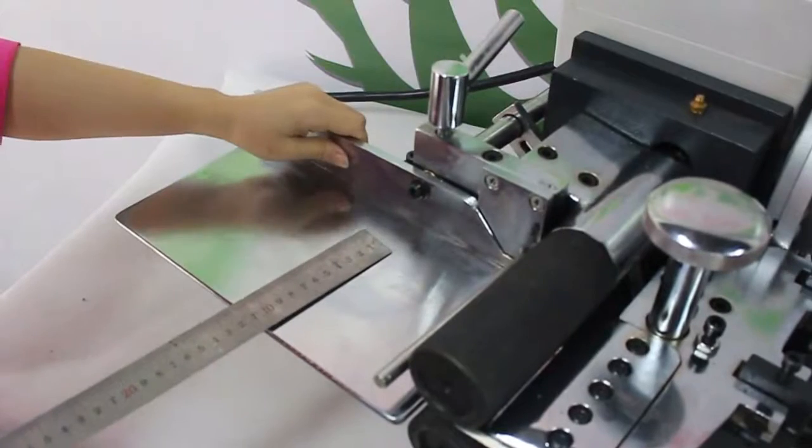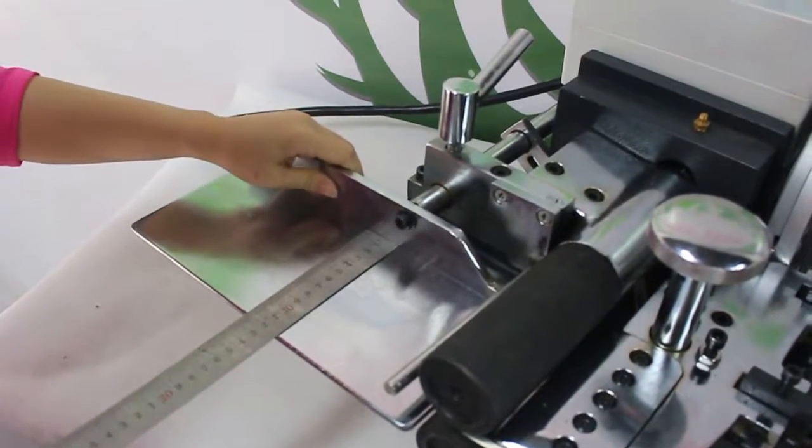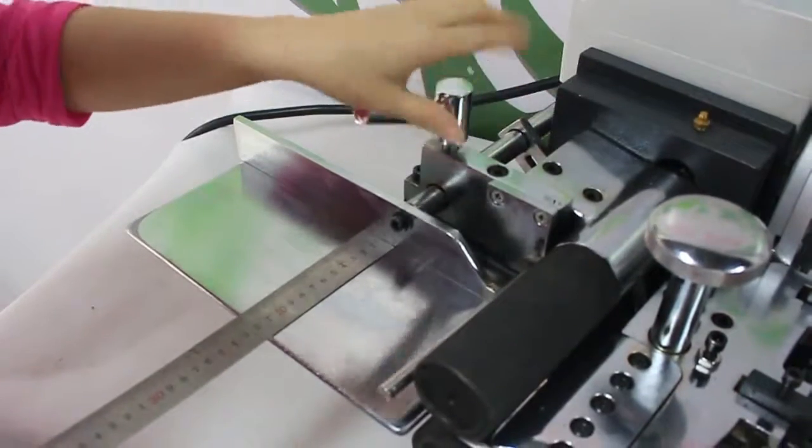First, unscrew the handle counterclockwise. Then, push the baffle. Adjust the cutting depth with the ruler.